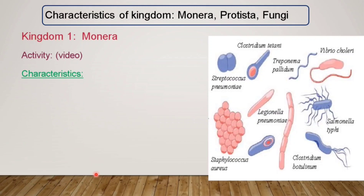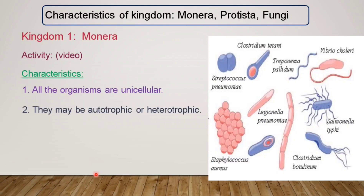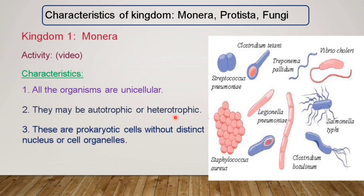All types of bacteria and blue-green algae are included in Kingdom Monera. The characteristics of Kingdom Monera are: first, all organisms are unicellular, meaning they have only one cell. Second, they may be autotrophic — producing their own food — or heterotrophic, depending on others for nutrition. Third, these are prokaryotic cells without a distinct nucleus or cell organelles.